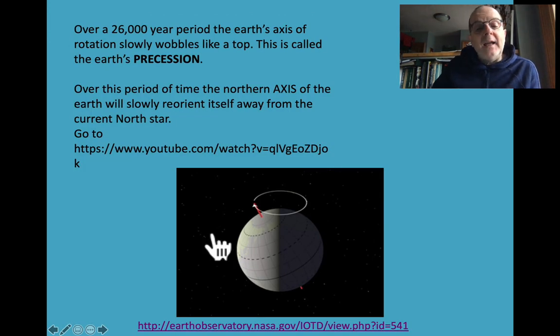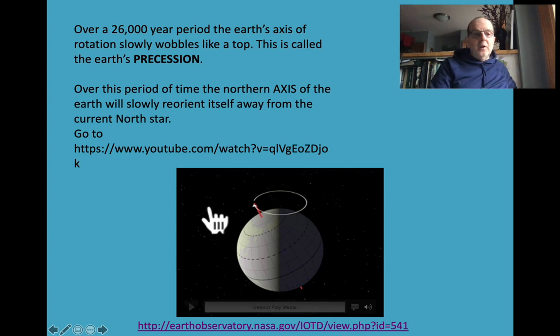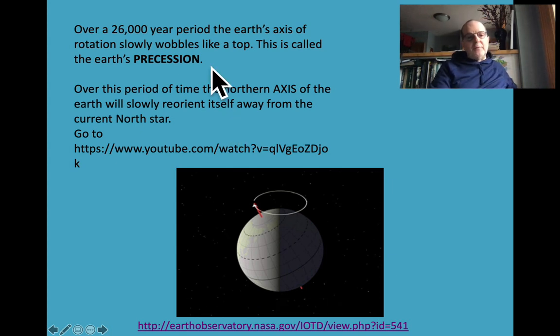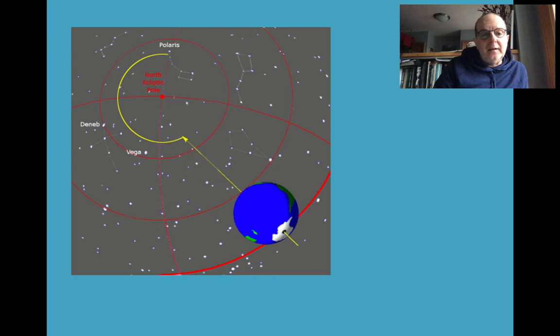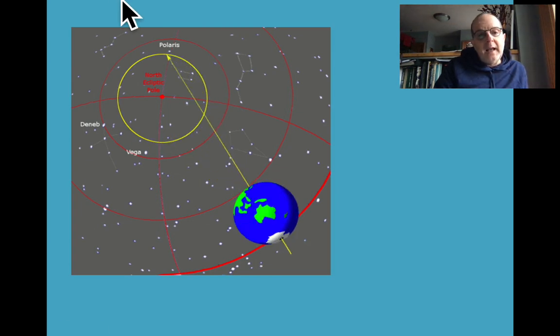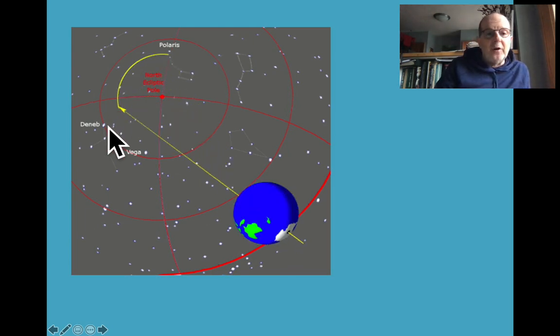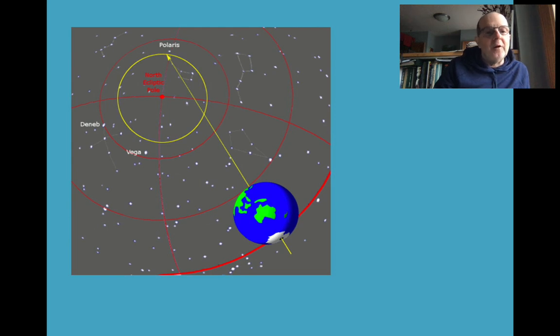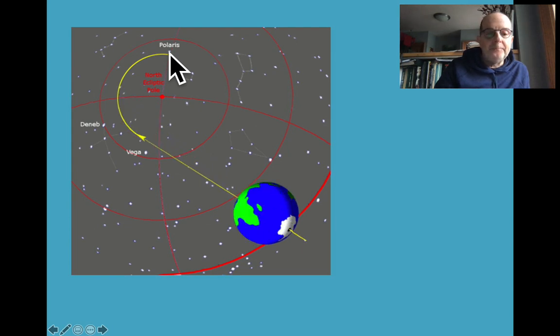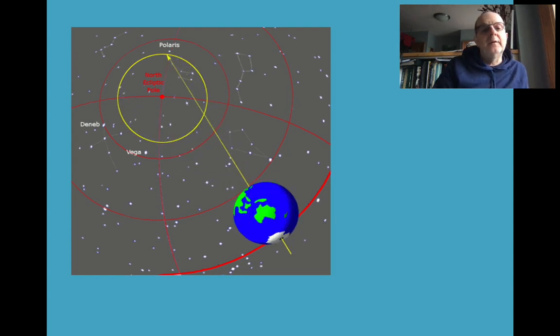I mentioned that there is a change to the direction at which our axis points over time, and we call that precession. Over a 26,000-year period, the Earth's axis of rotation slowly wobbles. Here we see it, where we are currently pointed at Polaris. We will wobble around over 26,000 years and come back to it. In that time, we will have other stars that will form what are considered to be a north star. But for the moment, we are lucky, we have Polaris. There are times in the Earth's history where there is no noticeable northern polar star.